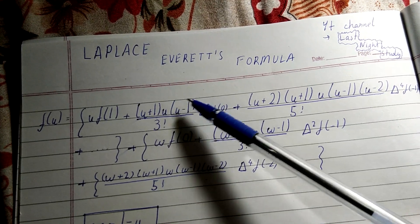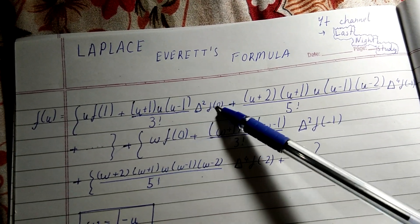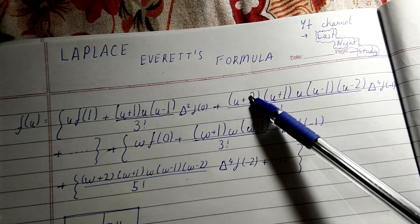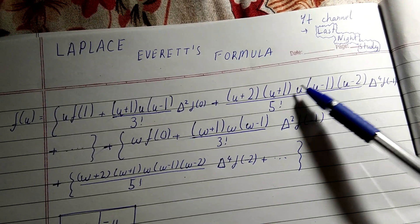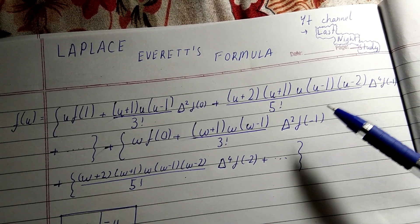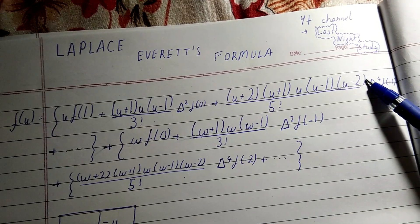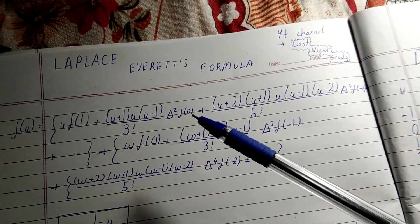...+ [(u+2)(u+1)·u·(u-1)(u-2)]/5!·Δ⁴f(0). Now you must notice two things: it is Δ² and it is Δ⁴, so we don't pick Δ³, we just jump from Δ² to Δ⁴.